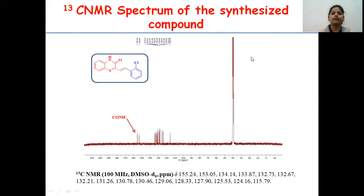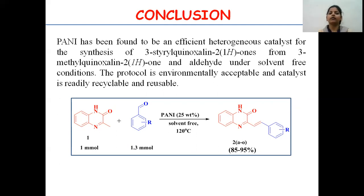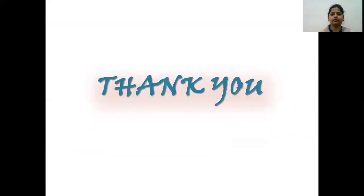This is the carbon-13 NMR spectrum of our synthesized compound. In conclusion, polyaniline has been found to be an effective heterogeneous catalyst for the synthesis of 3-methyl styryl quinoxalin-2(1H)-ones from 3-methyl quinoxalin-2(1H)-one and aldehyde under solvent-free conditions. The methodology is environmentally acceptable and the catalyst is readily recyclable and reusable. Thank you so much.